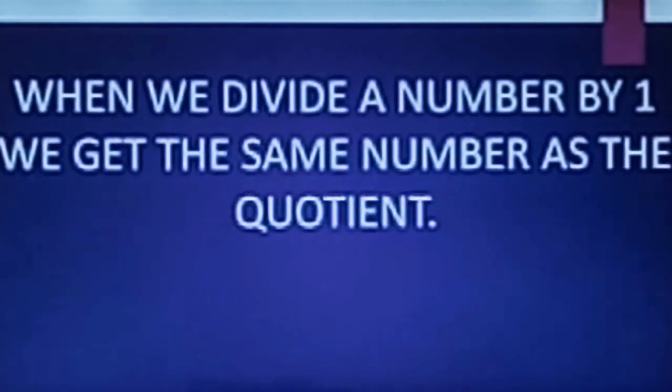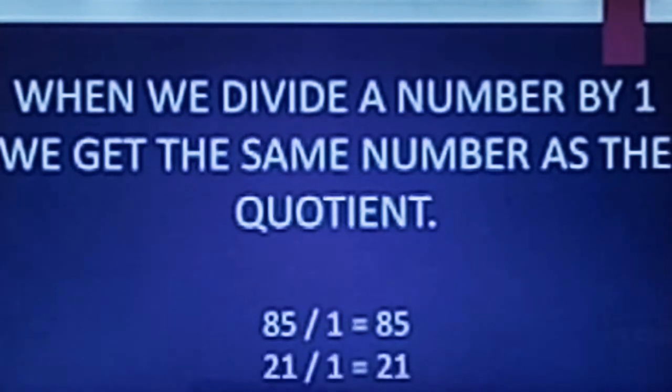We get the same number as the quotient. Let me take some examples so that you can understand this. 85 divided by 1 is 85. 21 divided by 1 is 21. Now let's look at the next property of division.